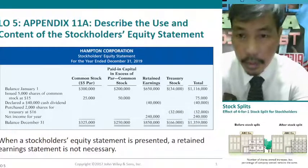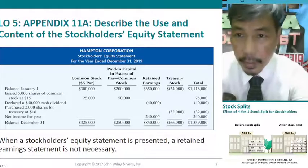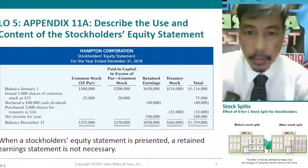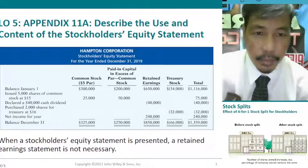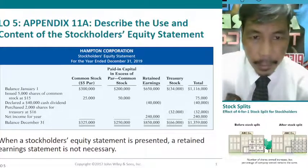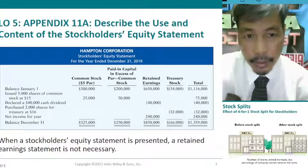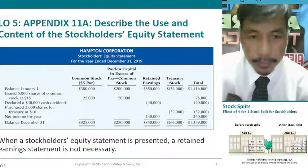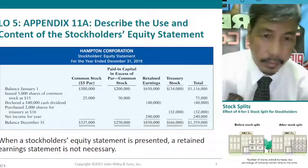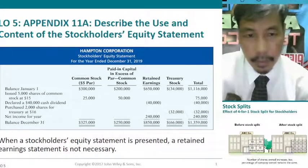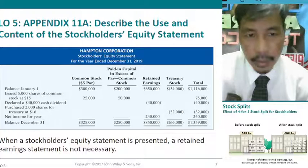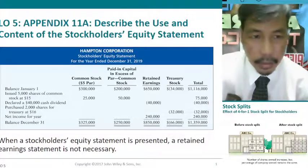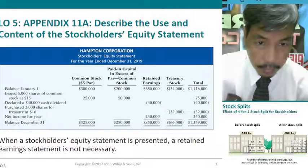In this lesson number five, chapter 11, we will describe the use and content of the stockholders' equity statement. We have a sample for Hampton Corporation — stockholders' equity statement for the year ended December 31, 2019. The balance as of January 1 shows the following columns: common stock, paid-in capital in excess of par, retained earnings, treasury stock, and total.